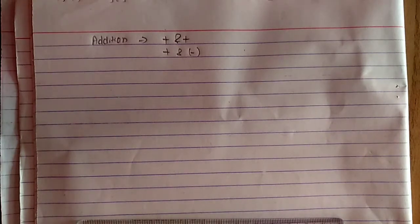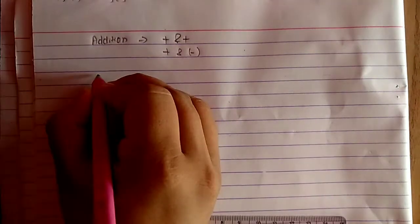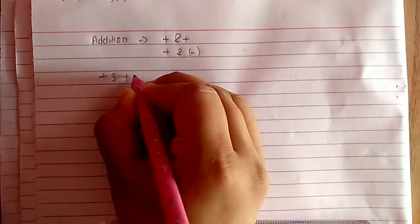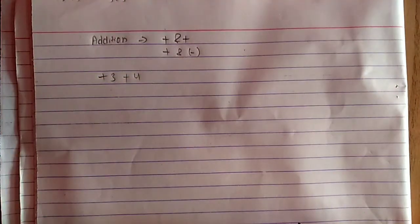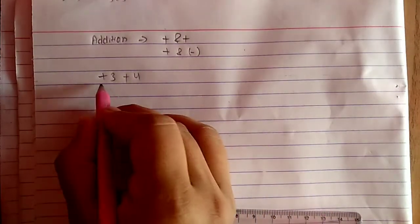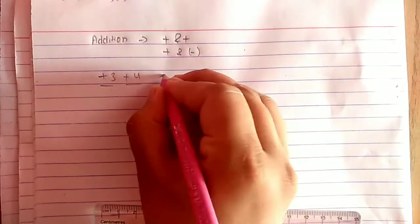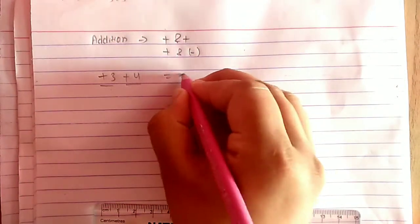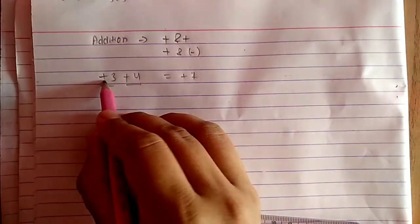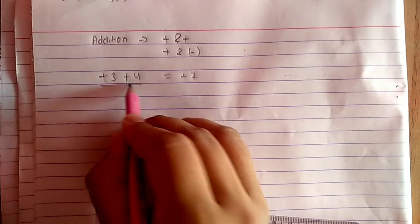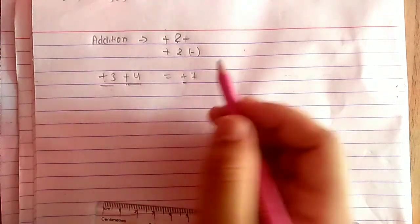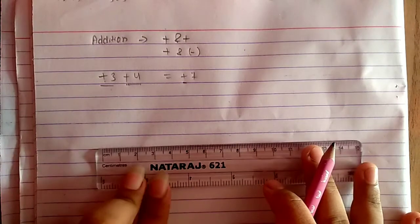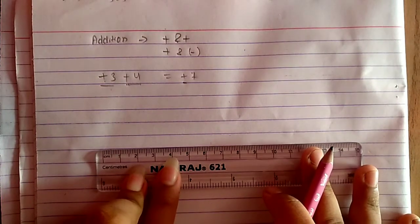Let me take the example of positive integer 3 and another positive integer 4. Since both are positive integers, three plus four equals positive seven. The result is also positive. We know the answer, but now let's see how to represent it on a number line.